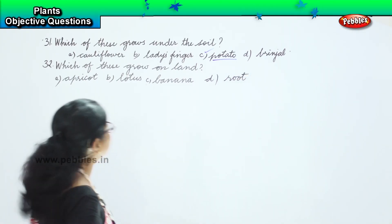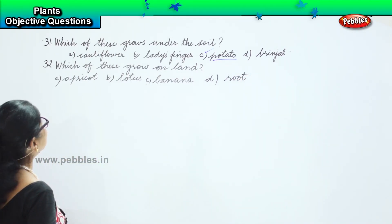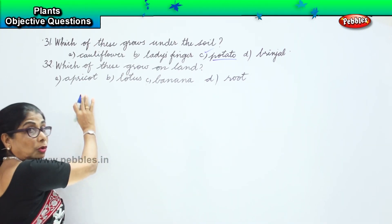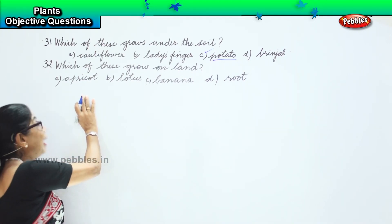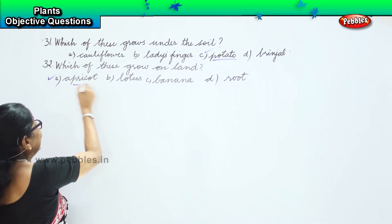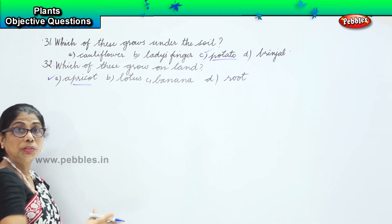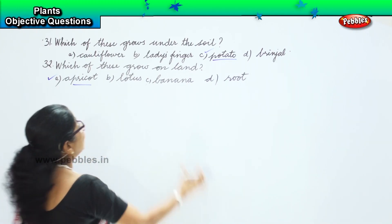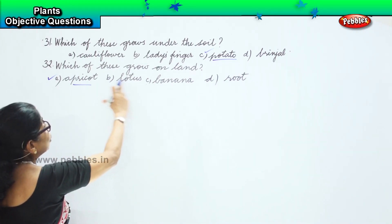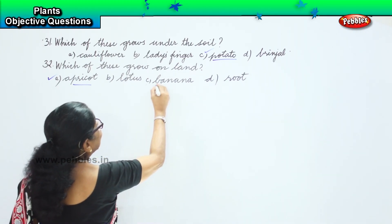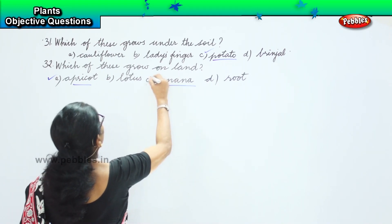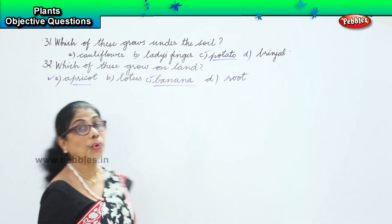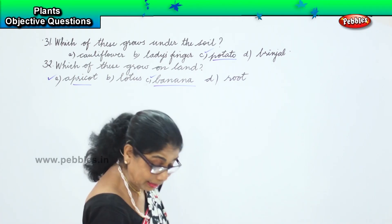You are given four options — which of these grow on land? Apricot grows on land, yes, option A. Lotus? No, lotus grows in water. Root? Root is under the soil. Banana? Yes, banana also grows on land. So banana and apricot grow on land.